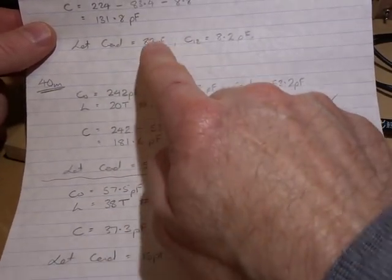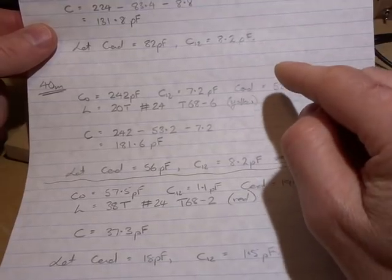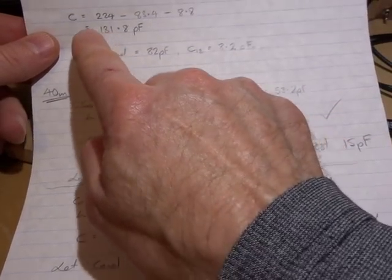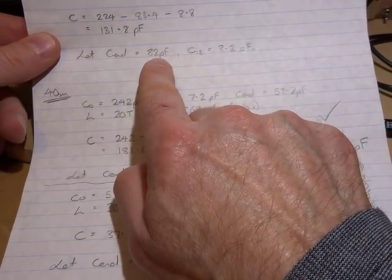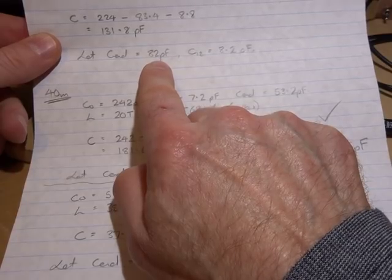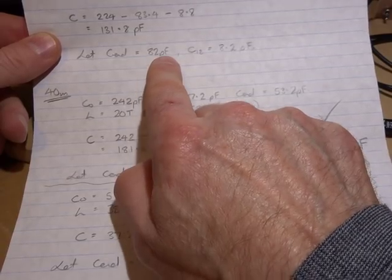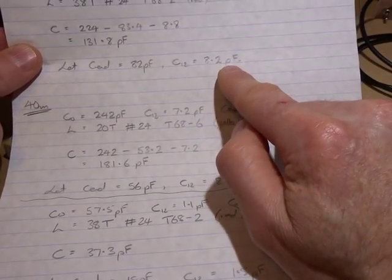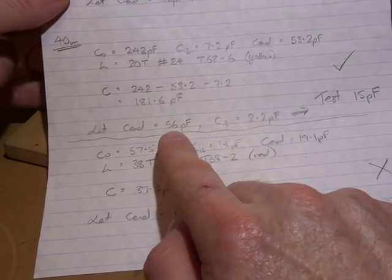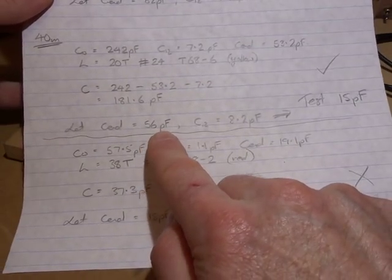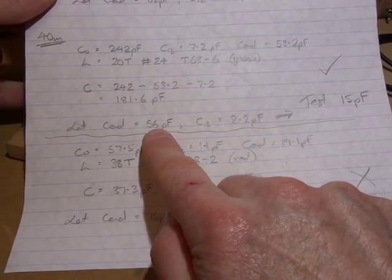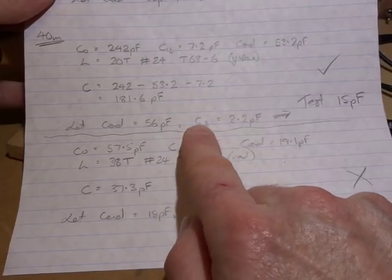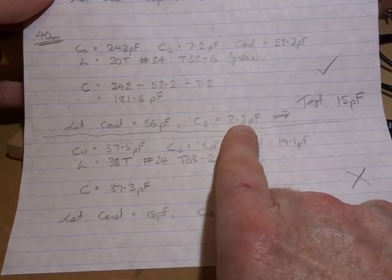Now I didn't mention up here the standard values. So for that 80 meter filter, the end capacitors I just used a standard value of 82 picofarads, and then for the capacitor between the two used 8.2. In the 40 meter case, I decided to use the end capacitors of 56 picofarads, and then the C12 was 8.2 pF.